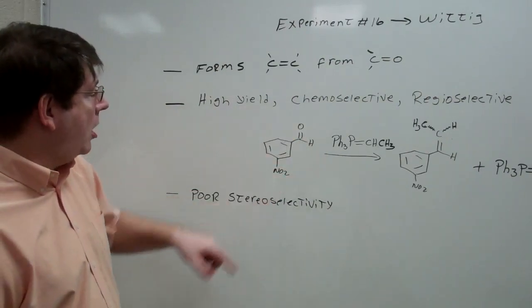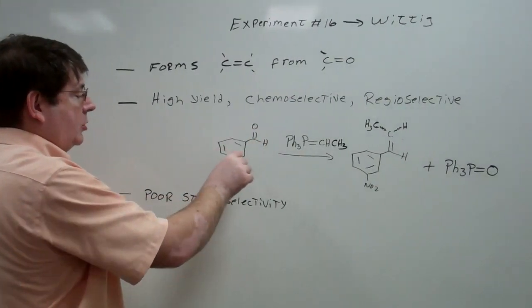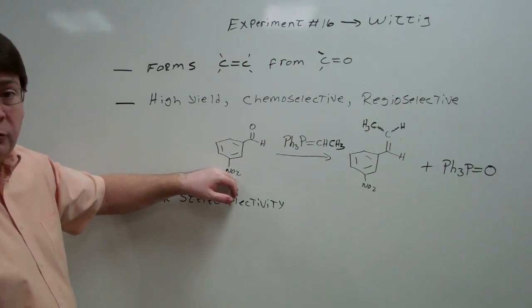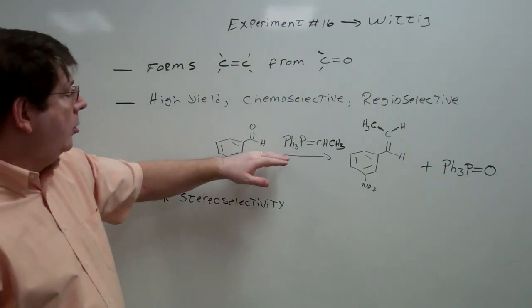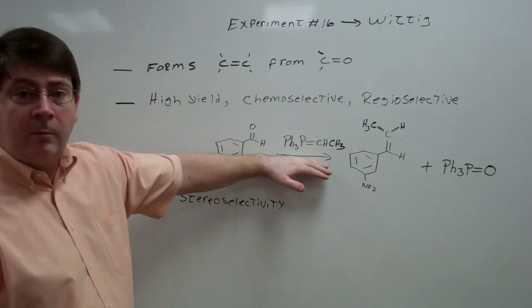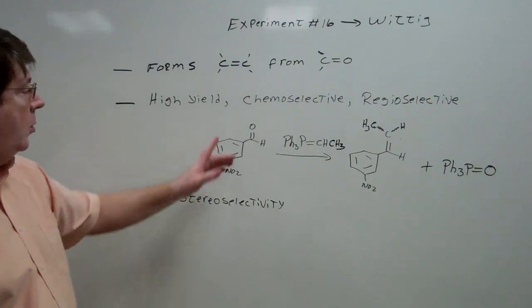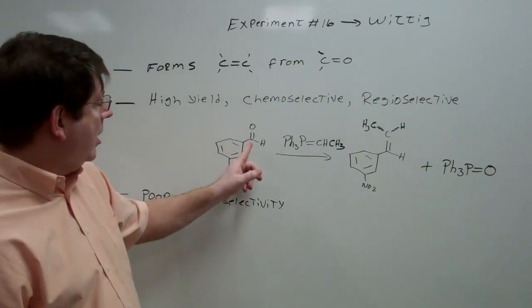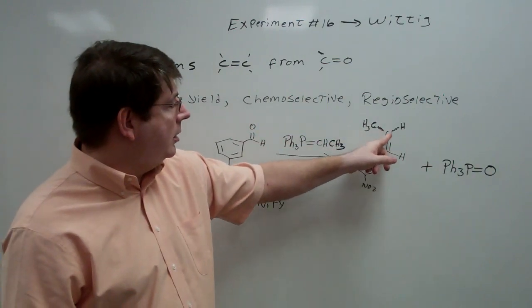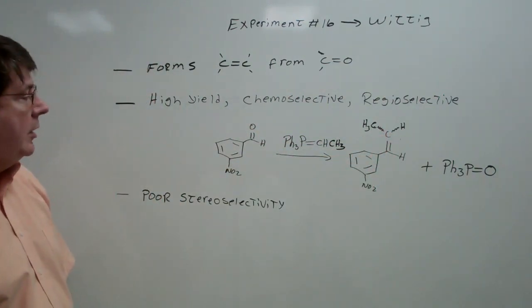For example, I've drawn an example here where we've got an aldehyde attached to a benzene ring that also has another functional group on it, and I've just arbitrarily selected the nitro group. That will react with what's known as an ylide. What I've got here is drawn in the ylide form, but this is also known as an ylid. When these react with one another, wherever that carbon-oxygen double bond is, is where the new carbon-carbon double bond is going to appear in the product. So it's very regioselective.